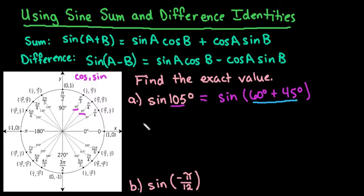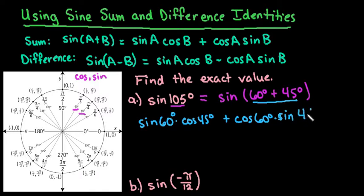now I can use the sum rule, and I can say that sine of 60 times the cosine of 45 degrees plus cosine of 60 times sine of 45 degrees. So now what we do is we go to our unit circle and we look at the two points and we find our angle measures.